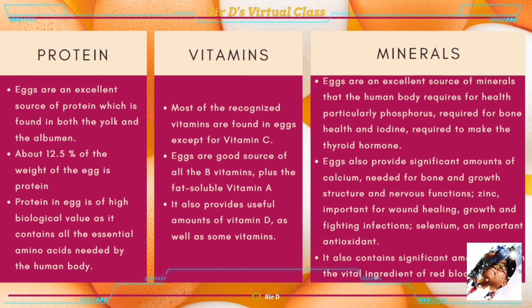Minerals: eggs are an excellent source of minerals that the human body requires for health, particularly phosphorus required for bone health, and iodine required to make the thyroid hormone. Eggs also provide significant amounts of calcium needed for bone and growth structure and nervous functions, as well as minerals needed for fighting infections. Selenium is an important antioxidant, and eggs also contain significant amounts of iron, a vital ingredient of red blood cells.